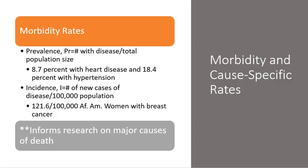Morbidity rates are where we get into the prevalence and incidence measures. Prevalence has to do with the number of people with the disease relative to the total population, and that can be for the whole population or specific subpopulations. Incidence has to do with the number of new cases — not the total number living with the disease, but the total new cases — and that informs research on major causes of death.